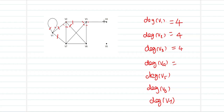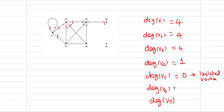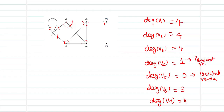For V4: only one edge is incident with it, so degree of V4 = 1. For V5: there are no edges incident, so degree of V5 = 0 — making V5 an isolated vertex. For V6: there are 3 edges, so degree of V6 = 3. For V7: there are 4 edges incident, so degree of V7 = 4. Vertex V4 with degree 1 is called a pendant vertex. These are the ways to measure degree of a vertex in an undirected graph.